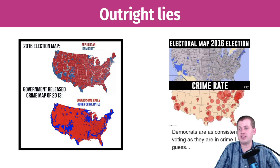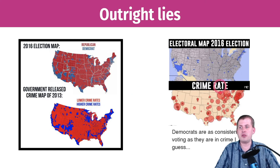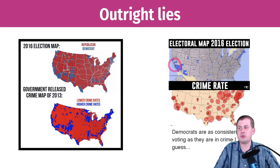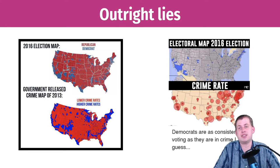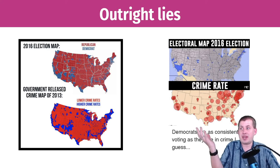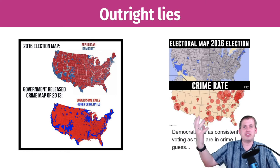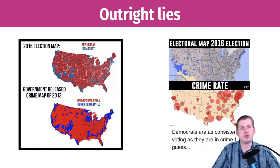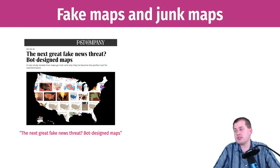So that's just one election map compared to another election map — of course they're going to move together, because precincts that vote for a president one cycle generally vote similarly the next cycle. That's an outright lie. The Washington Post actually did a fact-check article about this meme. A new version emerged using real crime rates instead of election results, but again, each bubble is just a big city — it's not because Democratic policies cause crime, it's just the natural effect of having lots of people in one area.